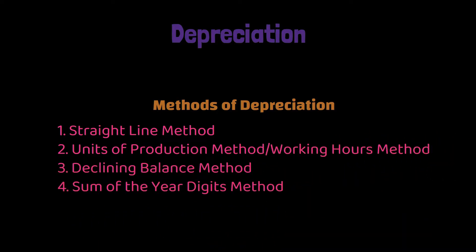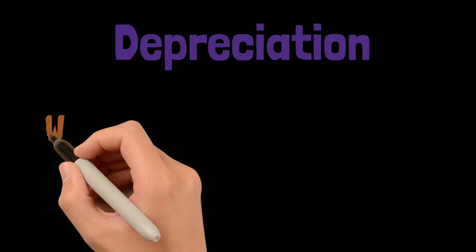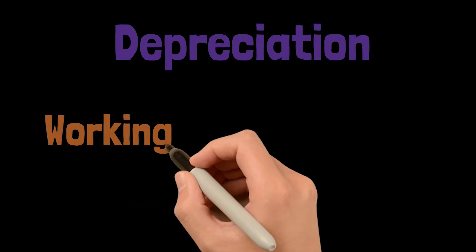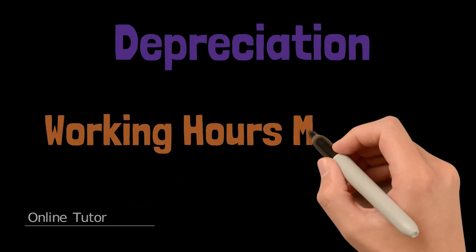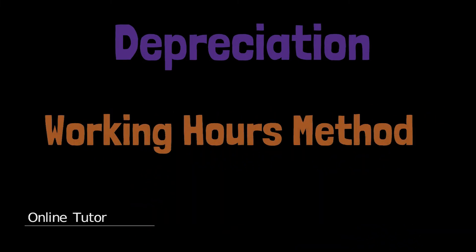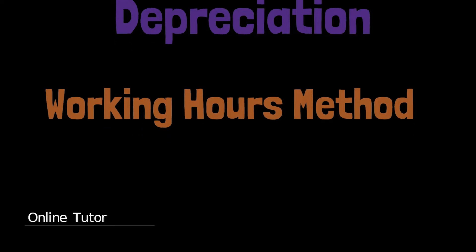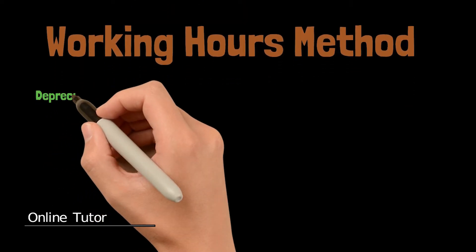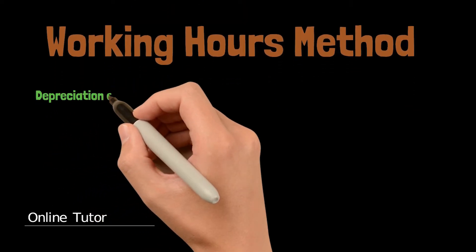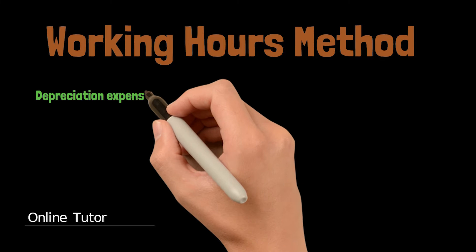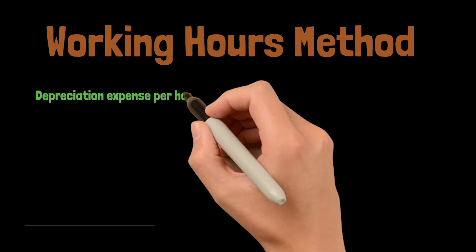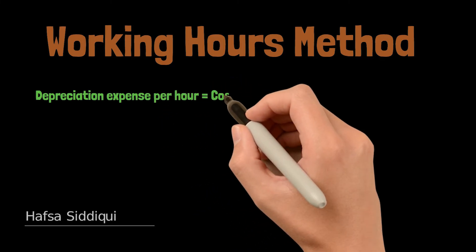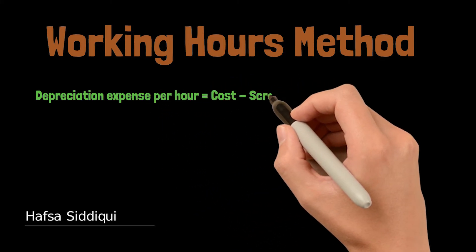In today's lecture, we will talk about the working hours method. In the working hours method, the formula used is: Depreciation expense per hour equals cost minus scrap value, divided by estimated life in hours.